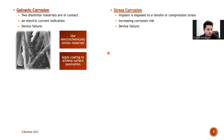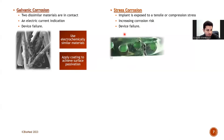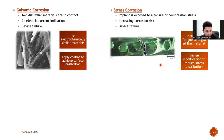Another common corrosion issue for biomaterials is stress corrosion. This occurs when an implant is exposed to tensile or compressive stress, such as body weight. This may increase the corrosion risk and lead to device and material failure, as shown in the cracked bone plate picture given here. Increasing the fatigue strength of the material or making a design modification that reduces stress distribution on the material surface can also reduce or completely block stress corrosion issues.